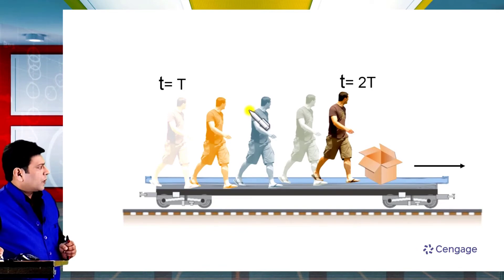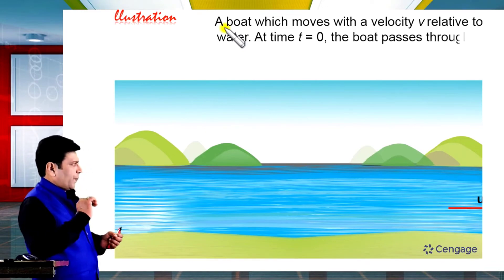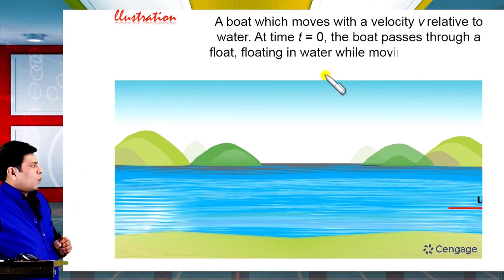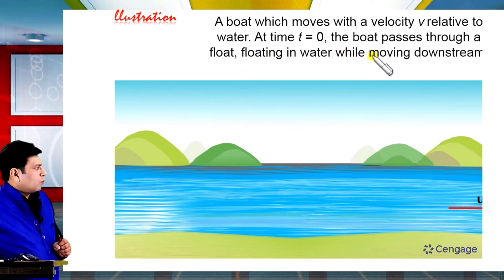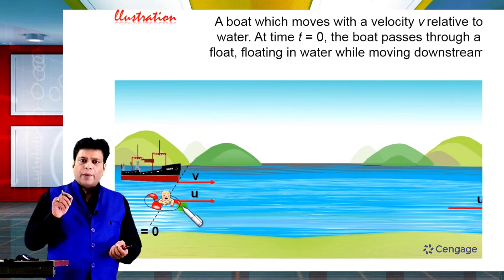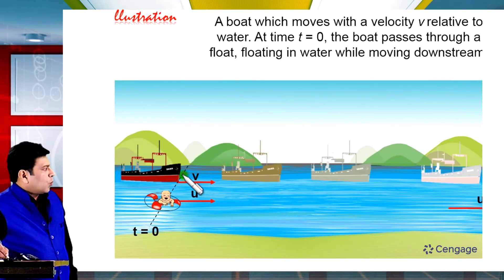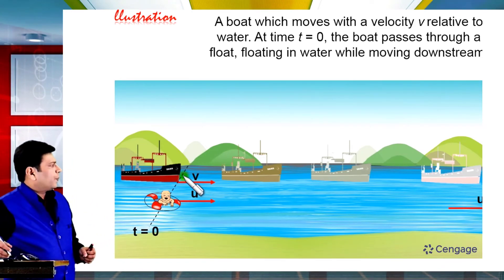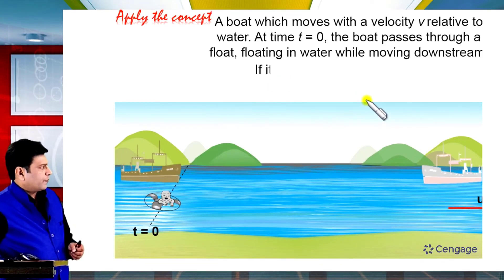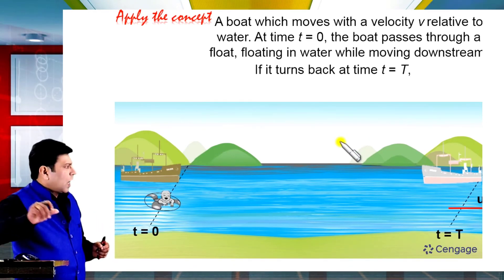Now let us take one more problem of the same category. A boat moves with velocity v relative to water. At time t equals 0, the boat passes through a float while moving in the downstream direction. The float's velocity with respect to ground is the same as the water velocity, that is u. The boat continues in the downstream direction until time capital T, after which it turns back in the upstream direction.